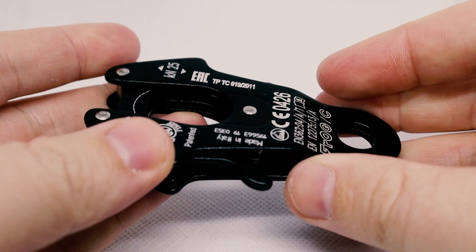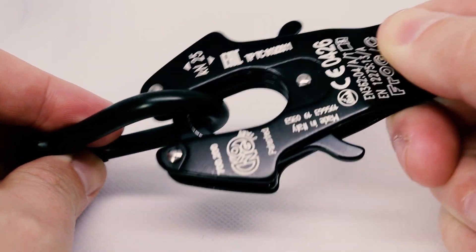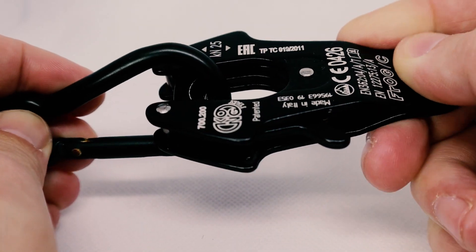This is a snap-close connector called a frog manufactured by Kong. They're used for climbing and rescues and have a satisfying self-closing mechanism.